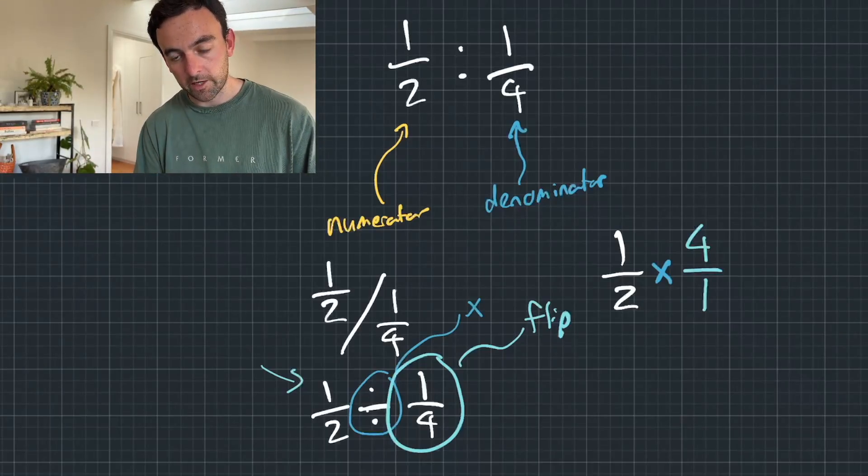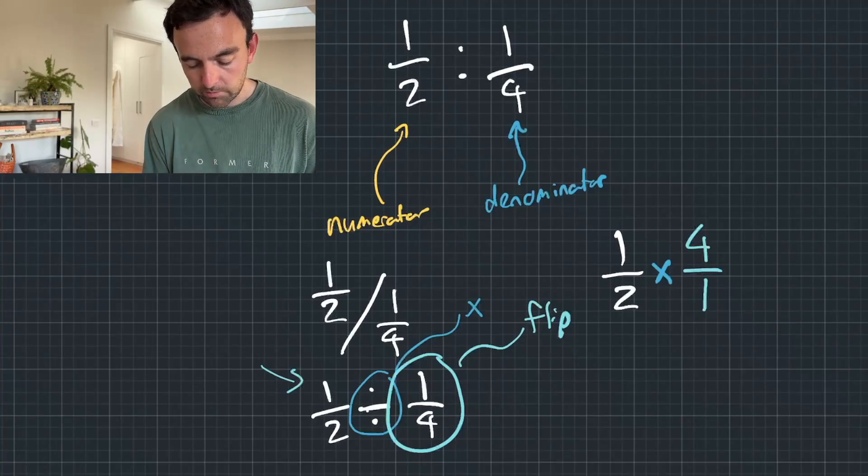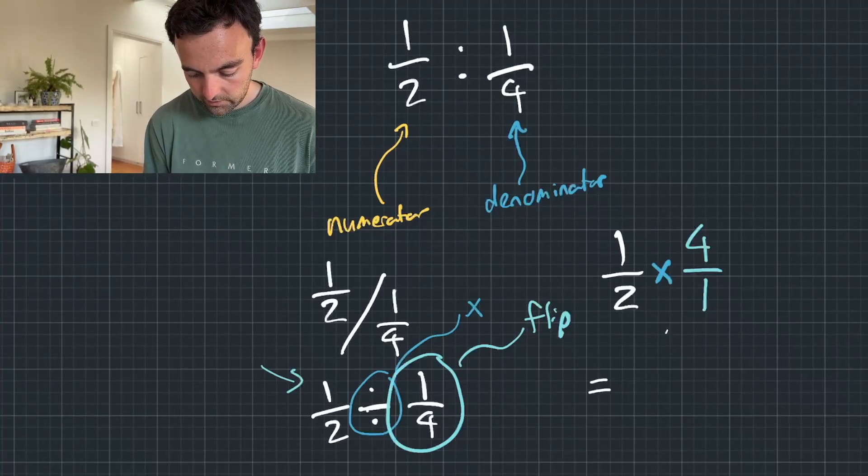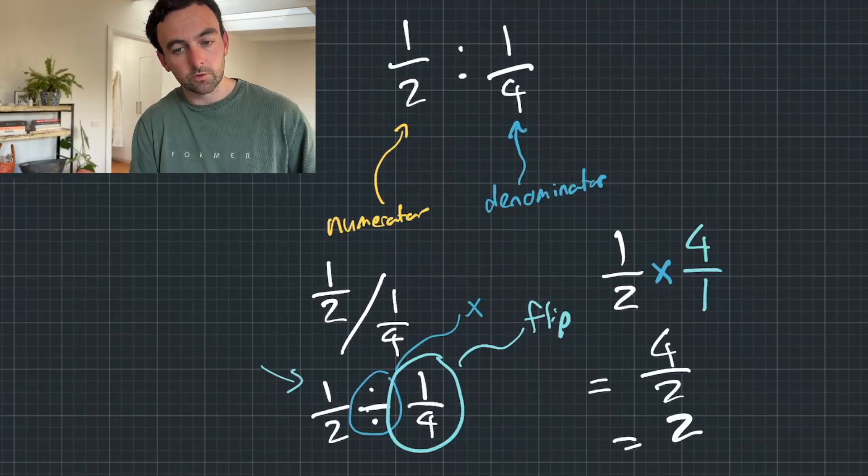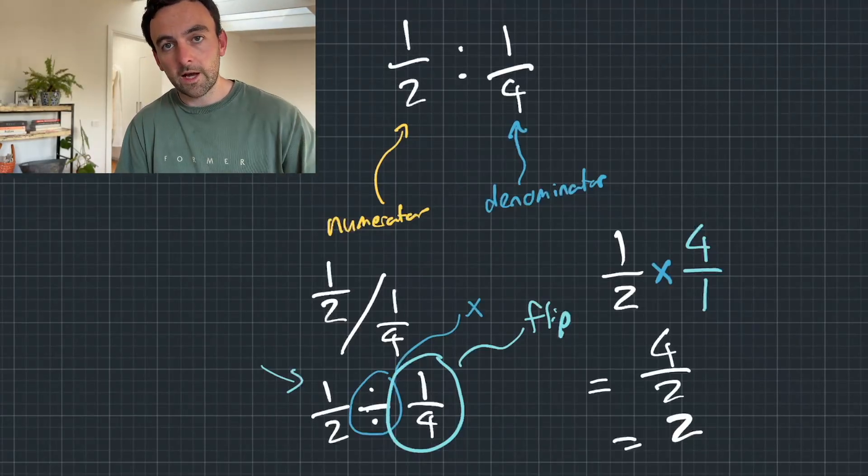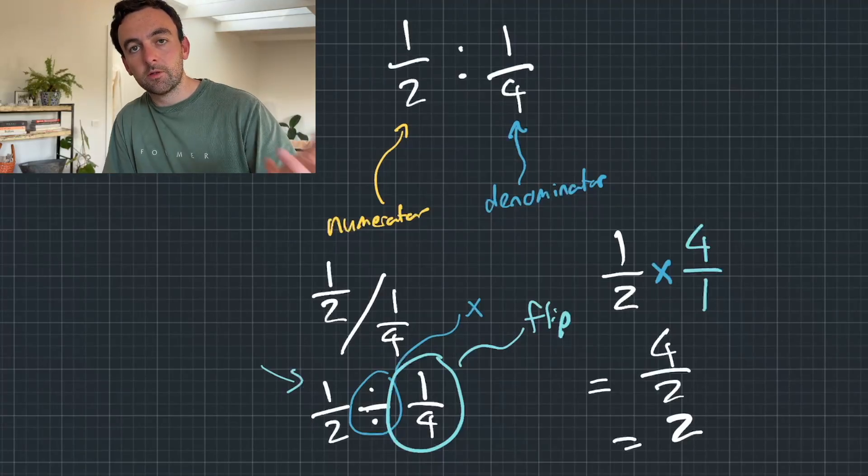Now, when we're multiplying fractions, all you need to do is just multiply the top and multiply the bottom. So this just becomes four over two, which then just equals two. So one half is double one quarter.